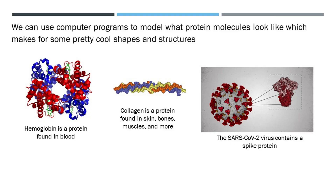With the power of computer programs, we can model what proteins actually look like, which makes for some pretty cool structures. Hemoglobin, shown on the left, is a protein found in our blood. Collagen, in the center, is a protein found all over our bodies, including in skin, bones, and muscles. The SARS-CoV-2 virus, pictured on the right, is covered in distinct spike proteins.